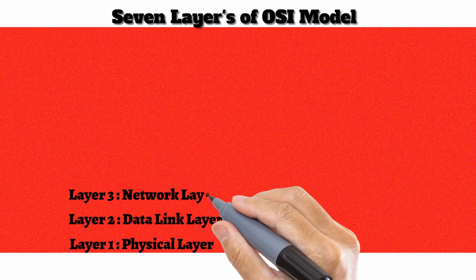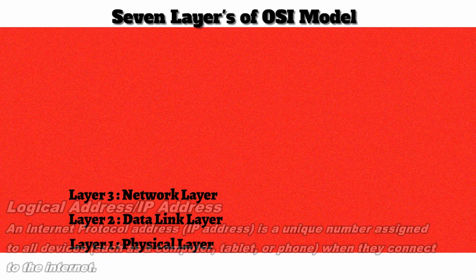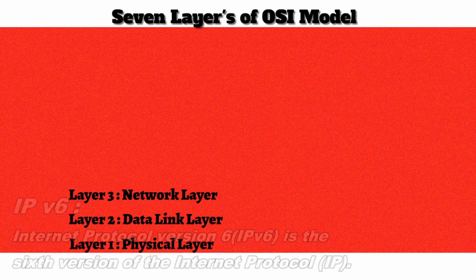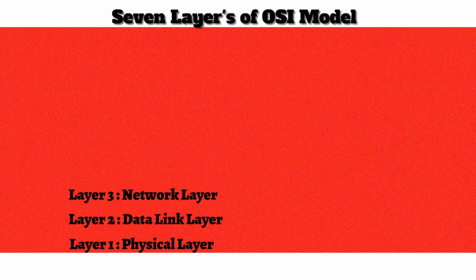This layer 2 device makes forwarding decisions based on that 48-bit address. Moving up to layer 3, the network layer, instead of making forwarding decisions based on a physical address, we might have something like a router. A router makes forwarding decisions based on a logical address such as an IP address. Our discussion will revolve around both IPv4 and IPv6. Back when the OSI model was originally created it was meant to be a very generic model, applying not just to IP traffic but other types like IPX and AppleTalk. But our main focus is on IP, which operates at layer 3.